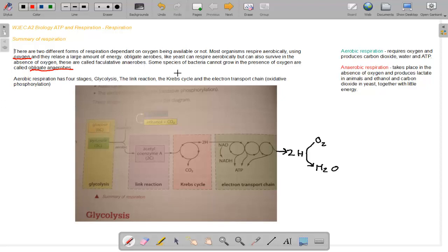So aerobic respiration has four stages: glycolysis, the link reaction, the Krebs cycle, and the electron transport chain or oxidative phosphorylation. If you can't remember what that is, go back to my previous tutorial on phosphorylation. So first we'll go through definitions.